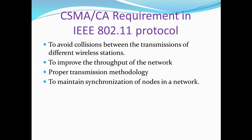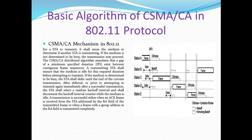Now why do we require CSMA/CA in the 802.11 protocol? The main reasons are: to avoid collisions between the transmissions of different wireless stations, to improve the throughput of the network, because CSMA/CA provides a proper transmission methodology, and to maintain synchronization of nodes in a network.